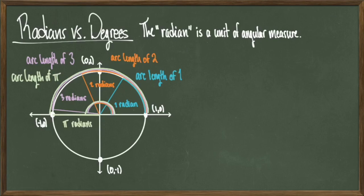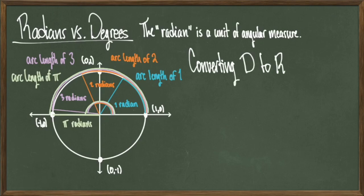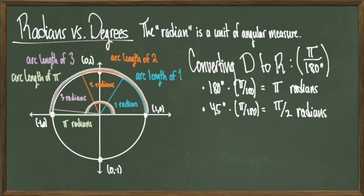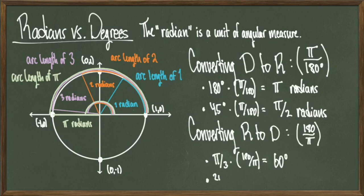We are now going to describe our angles in terms of pi instead of numbers between 0 and 360. Since I drew the unit circle in degrees, I want to know how to convert to radians. The conversion is done by multiplying the angle in degrees by pi over 180 — you're inserting the pi part and deleting the 180. Our first translation confirms that 180 degrees corresponds to pi radians. As another example, 45 degrees in radians comes out to pi over 4. To convert from radians to degrees, multiply by 180 over pi — so pi over 3 radians translates to 60 degrees, and 2pi over 3 radians translates to 120 degrees.